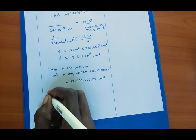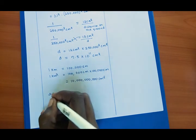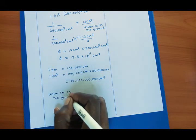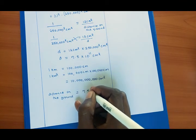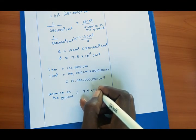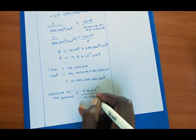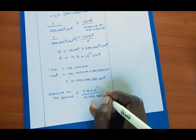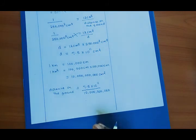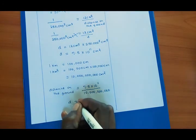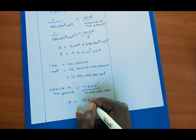So distance on the ground. Now we are going to convert this which is 7.5 times 10 to the power 11. We shall divide it by 10 to the power 10. So our D will give us 7.5 square kilometers.